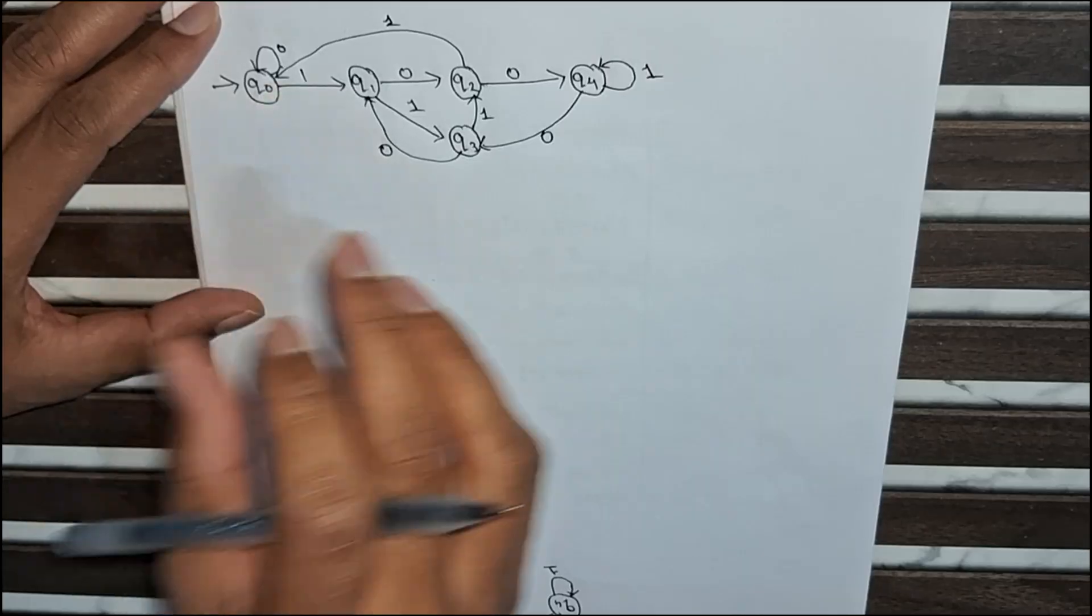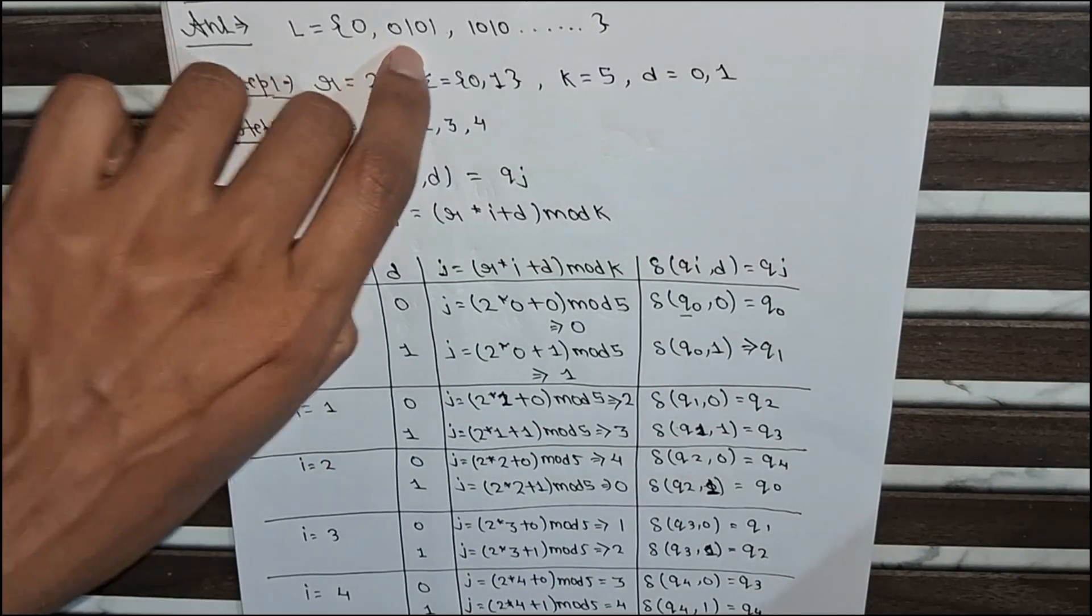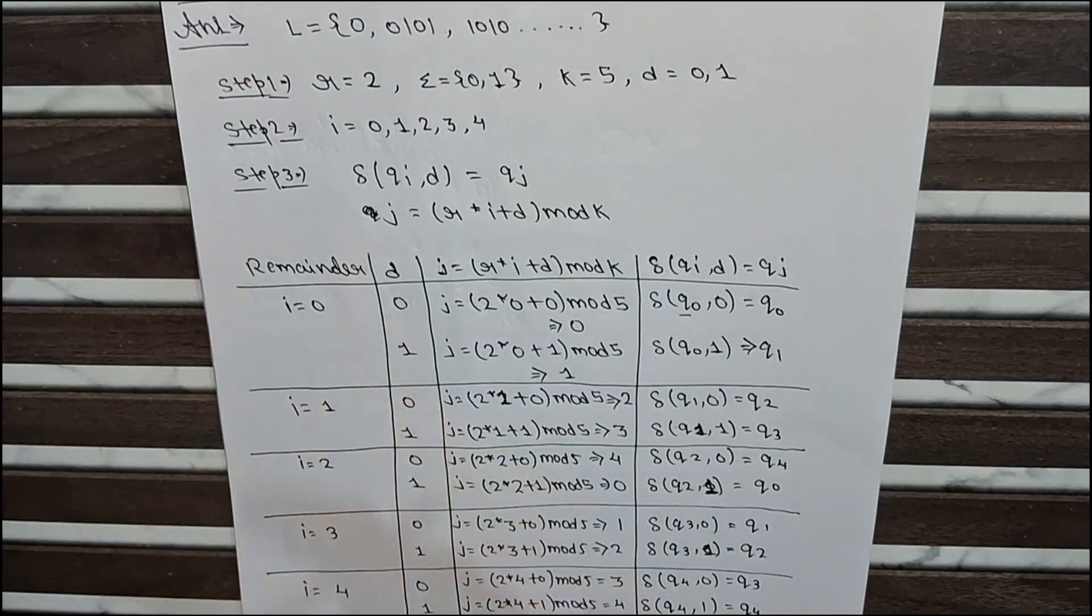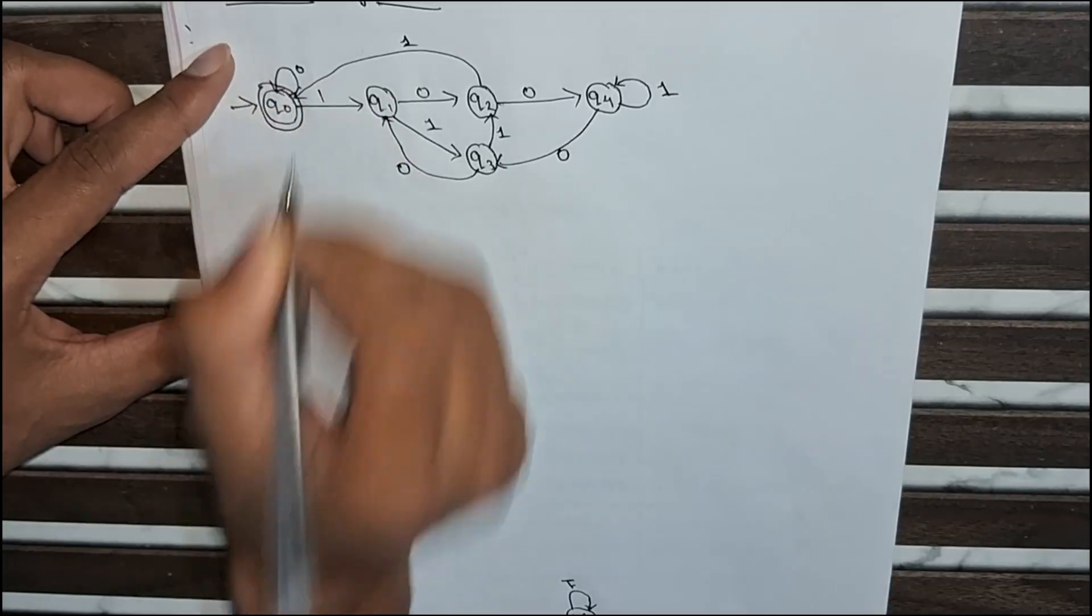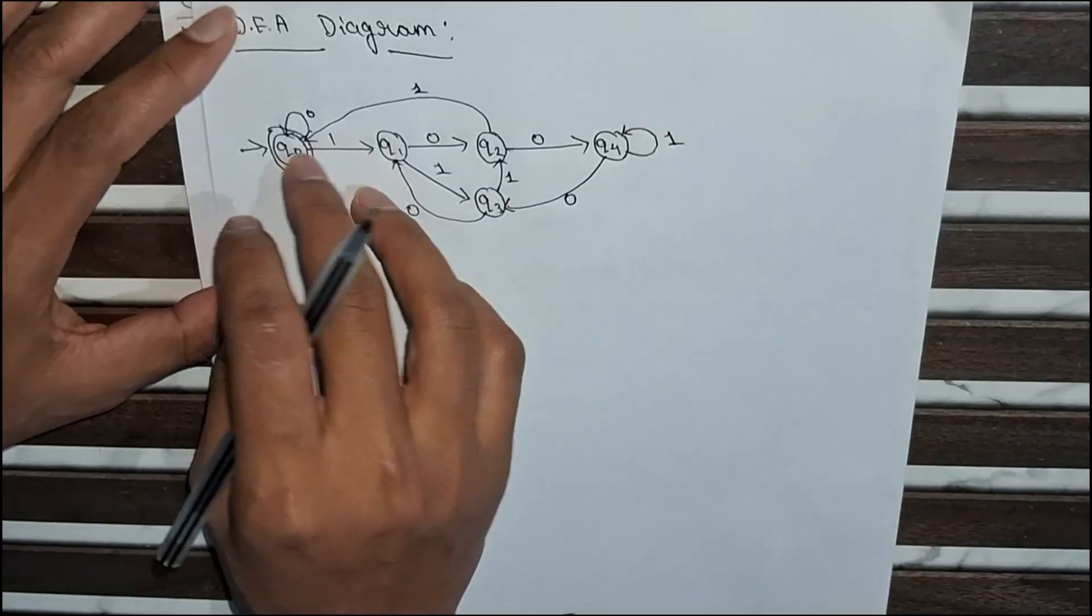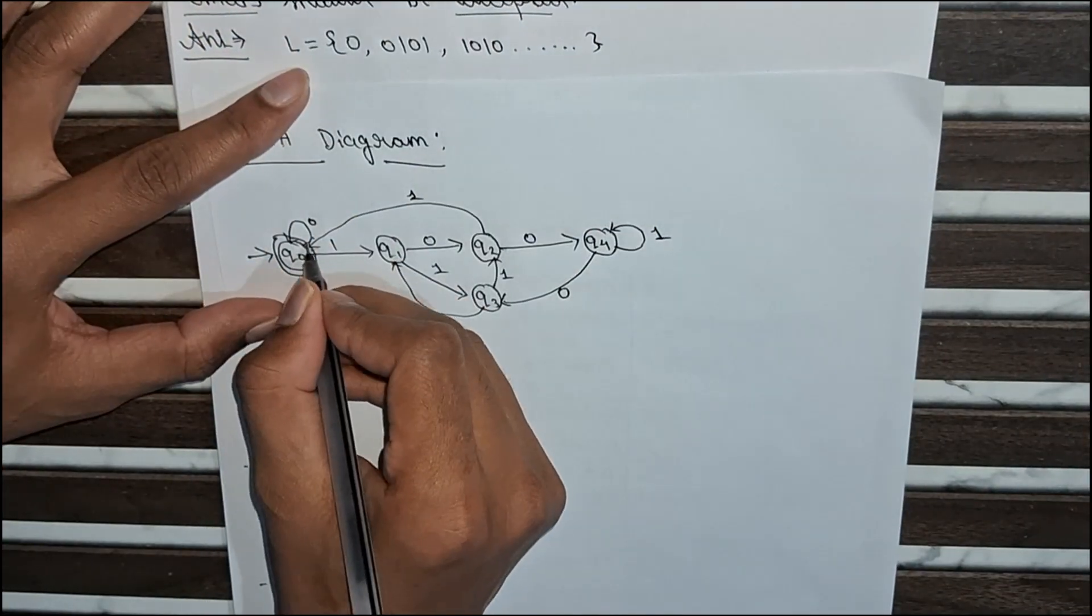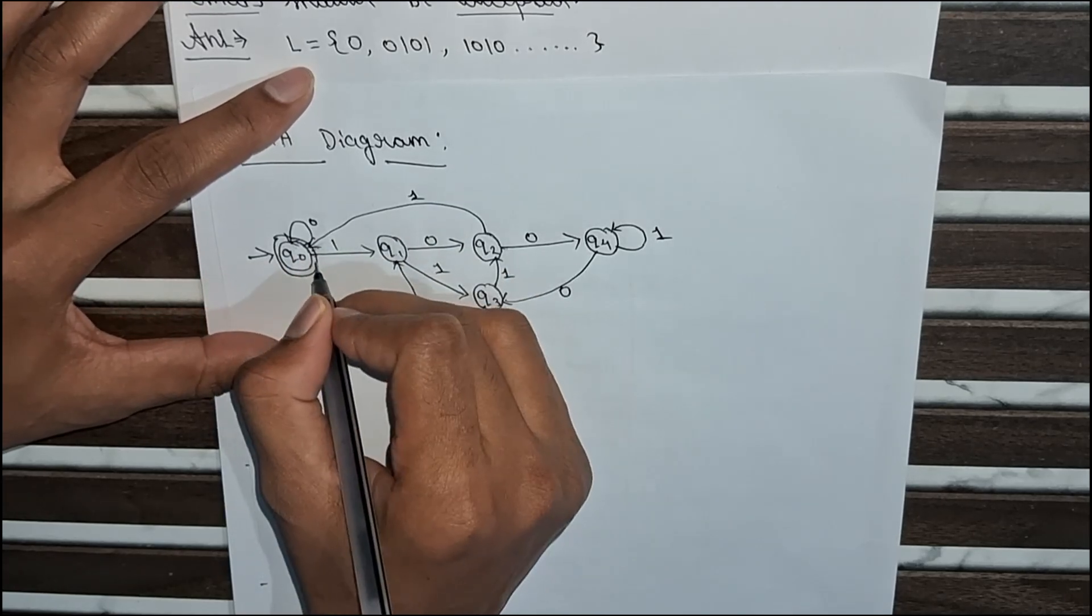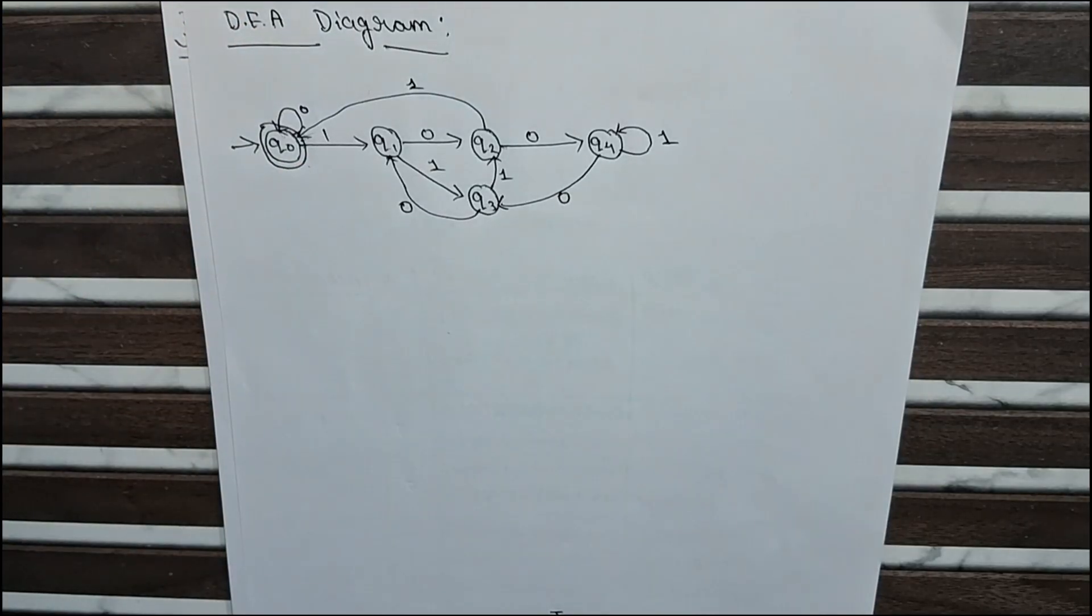Now we have to declare the final state. The initial state is q0 and the final state will be q0 itself. This will be both initial and final state because we have to accept 0, 5, 10. Zero will be accepted, then 0101 for 5, then 1010 for 10 will be accepted. This will be our final state. Thank you for watching our video.